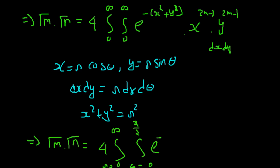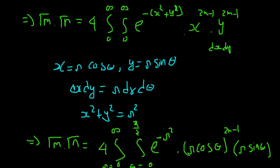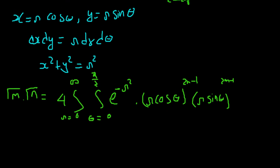The exponential becomes e to the power minus r squared, since sin squared theta plus cos squared theta equals 1. Substituting x equals r cos theta gives the factor (r cos theta) to the power 2n minus 1, and y equals r sin theta gives (r sin theta) to the power 2m minus 1. And dx dy becomes r dr d theta.